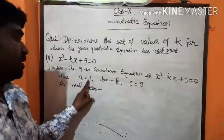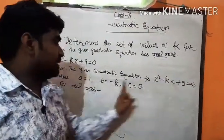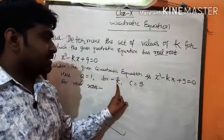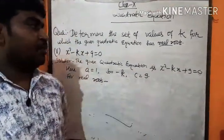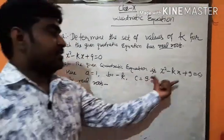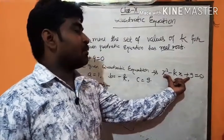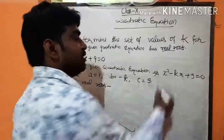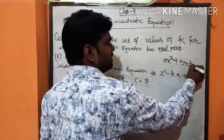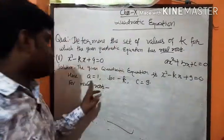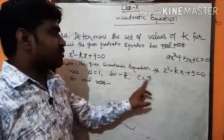Here, the coefficient of x squared is 1, the coefficient of x is minus k, and the constant term is 9. We compare with the standard form of the quadratic equation, which is ax squared plus bx plus c equal to 0. So, a is equal to 1, b is equal to minus k, and c is equal to 9.